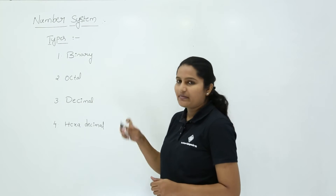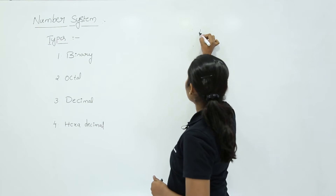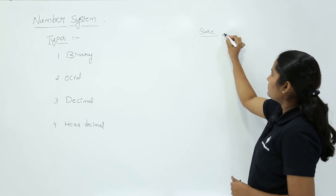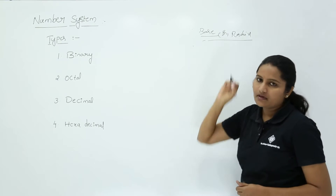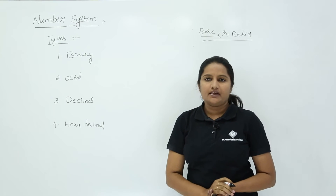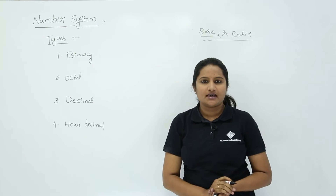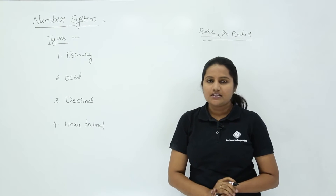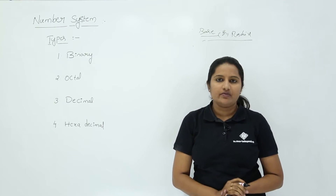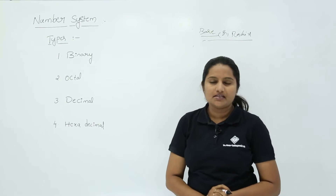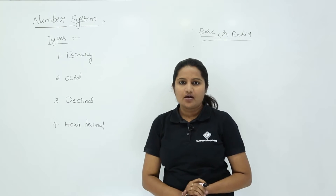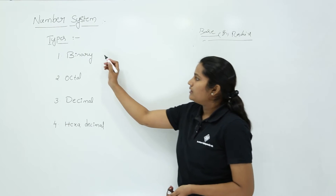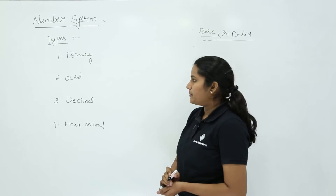The base or radix of a number system is nothing but the value representing that number system. This base or radix is always used to define the maximum value of digits, symbols, or letters used in that particular number system. Now let us see each number system one by one for base and radix.